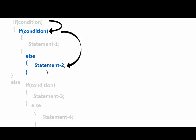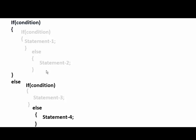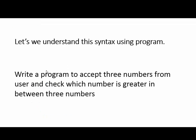If condition one is false, then control will be passed to its else part and a third if condition is checked. If true, statement three will be executed. If condition one is false and the third if is also false, then statement four will be executed — that is, the third if's else statement. Now let's understand this syntax using a program to accept three numbers and check which is greatest.